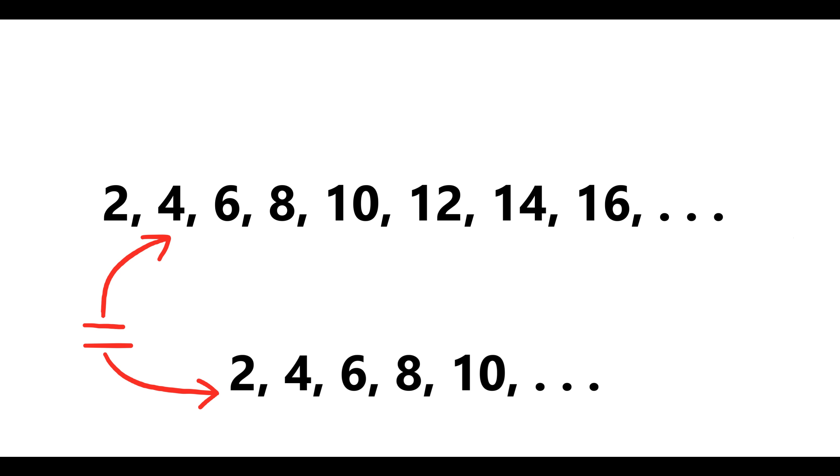But that's exactly the same set we had when we removed all the odd numbers from the original set. Not sort of the same set or vaguely the same set, but the exact same set. Every single number in this new set is present in the set of even numbers we obtained by removing all the odd numbers from the original set. By definition, doubling all whole numbers just gives you all the even numbers. That's what even numbers are. And that's precisely the set we obtained by removing all the odd numbers from the original set.